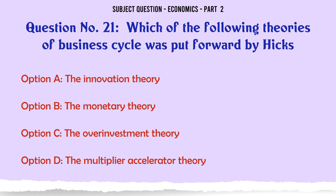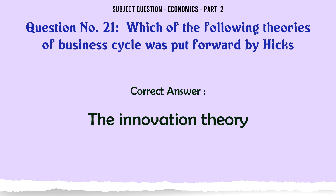Which of the following theories of business cycle was put forward by Hicks? A. The innovation theory. B. The monetary theory. C. The overinvestment theory. D. The multiplier accelerator theory. The correct answer is: D — the multiplier accelerator theory.